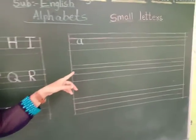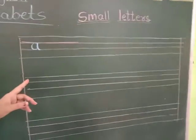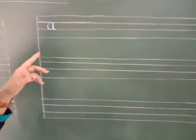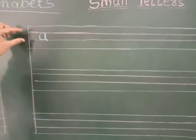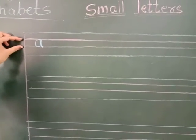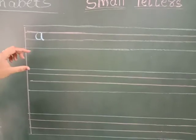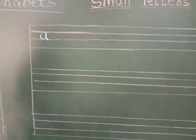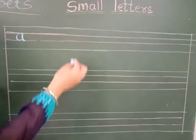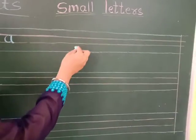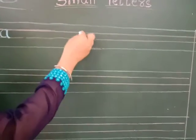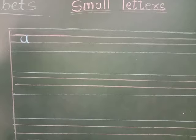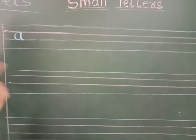But now when we are going to learn the small letters, some letters you have to write only in the middle two lines. Some letters you have to write in the upper three lines. And some letters you have to write in the downside three lines — one, two and three. So you have to pay attention on the lines.